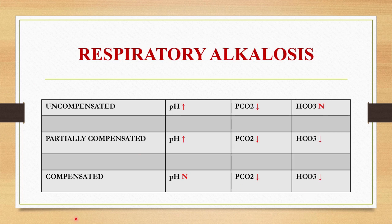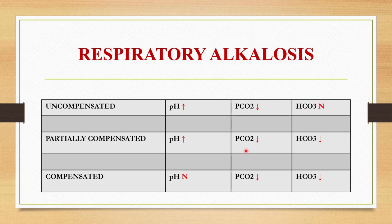Now we can see about uncompensated, partially compensated, and fully compensated respiratory alkalosis. In respiratory alkalosis, pH will be high and PCO2 will be low. So if it is uncompensated, pH will be high, PCO2 will be low, and the bicarbonate level will be normal. If it is partially compensated, pH level will be high, PCO2 will be low, and bicarbonate level will also be low.